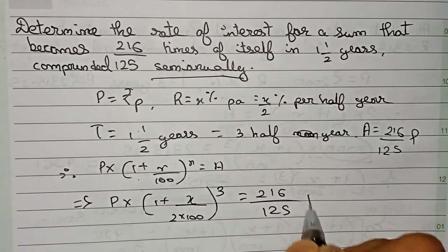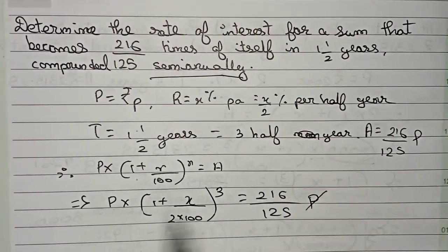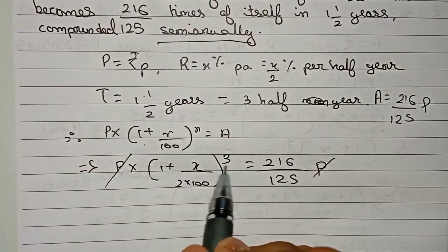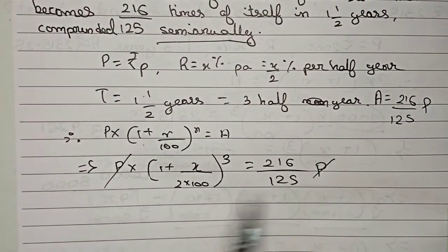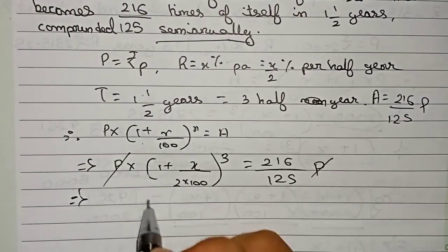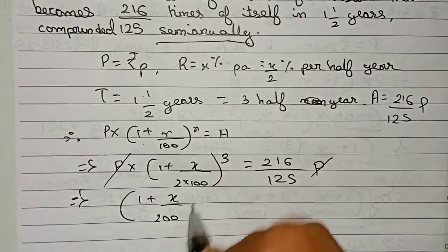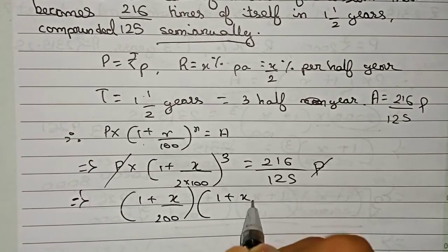So cut the principle, we can cut it. So now to the power 3, that means this number will return three times. So write it three times: 1 plus x by 2 into 100, that is 200, again 1 plus x by 200, 1 plus x by 200.